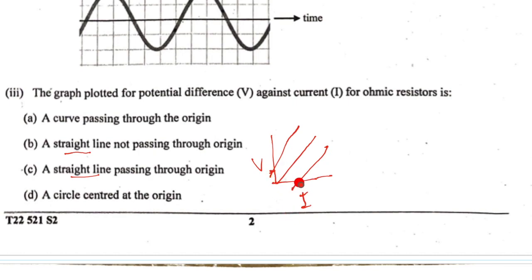and this means that the potential difference is 0 but still the current is passing. So this is the correct option, means C is the correct option.